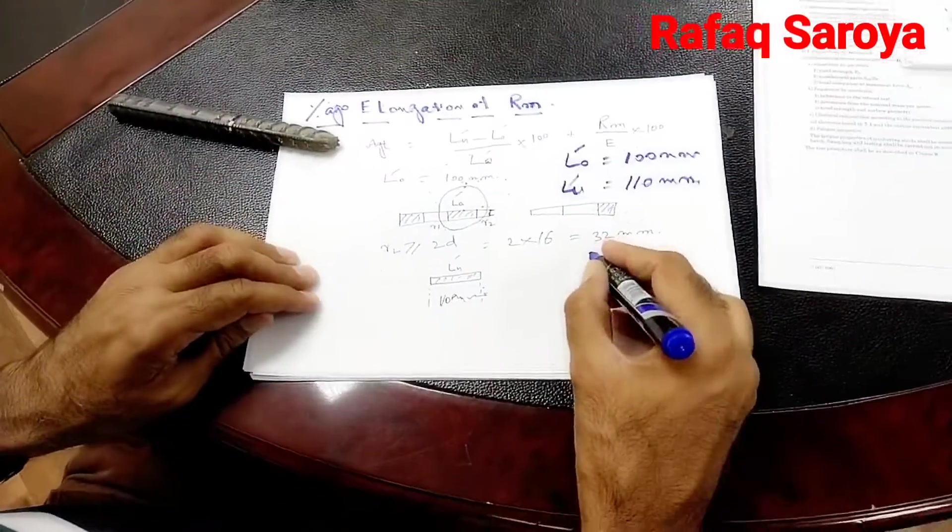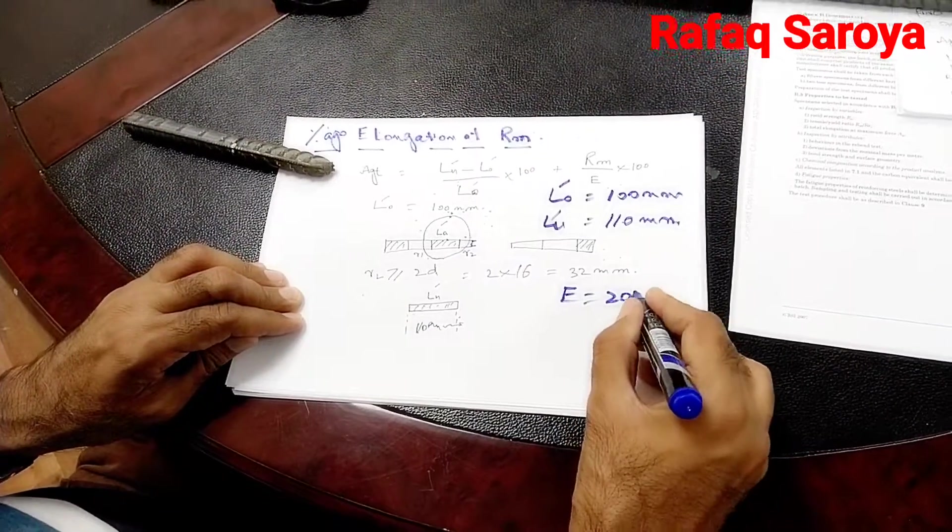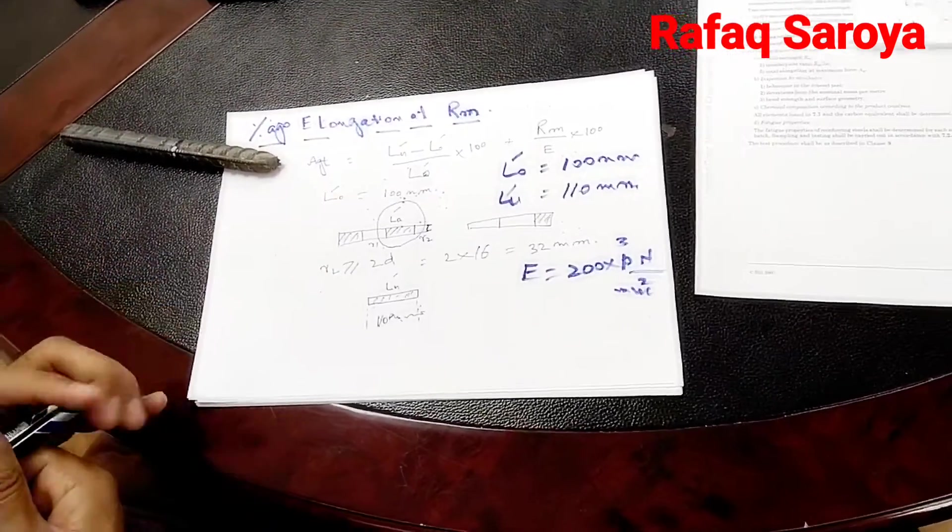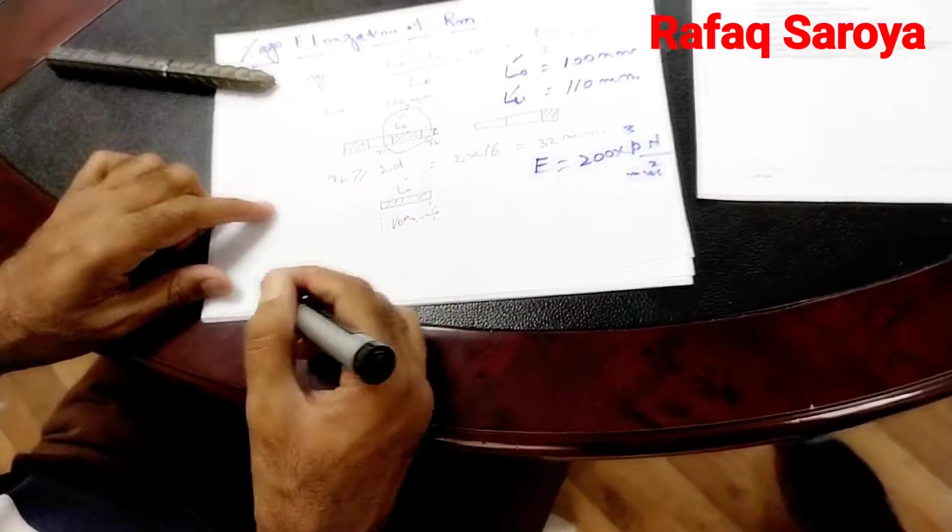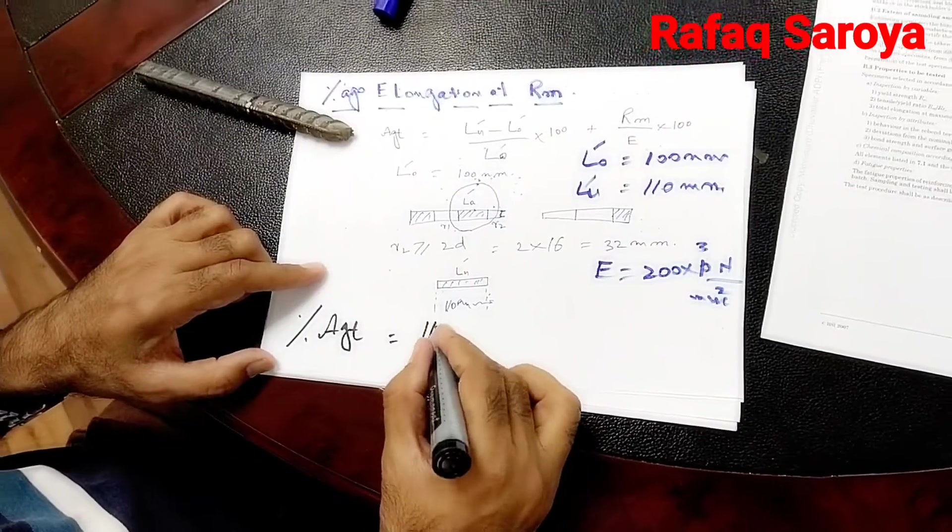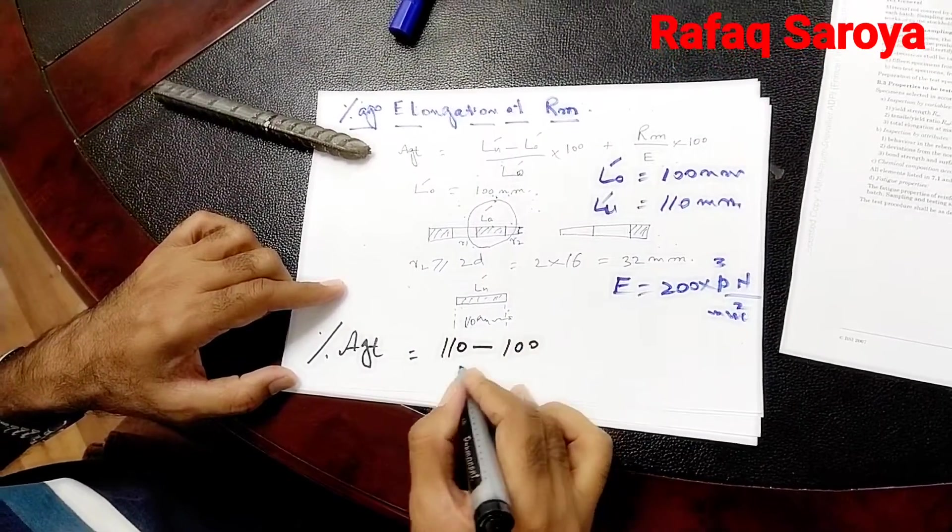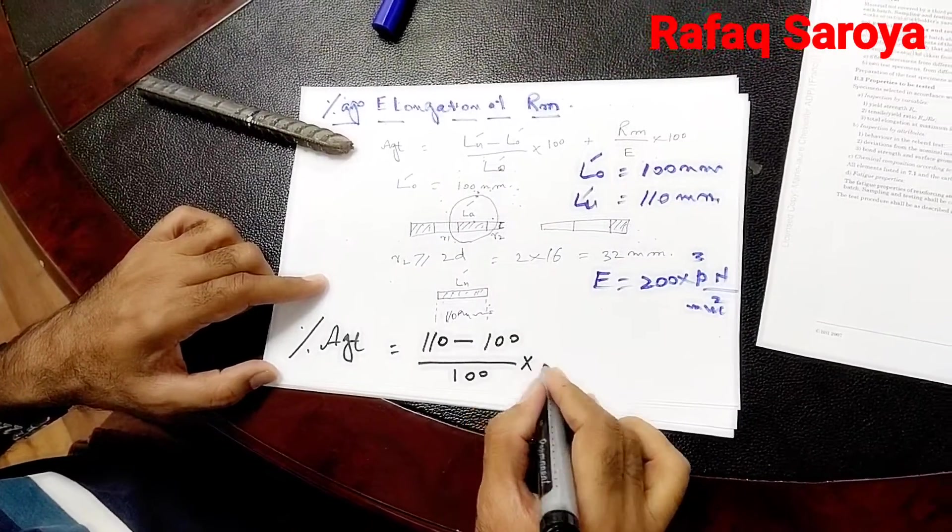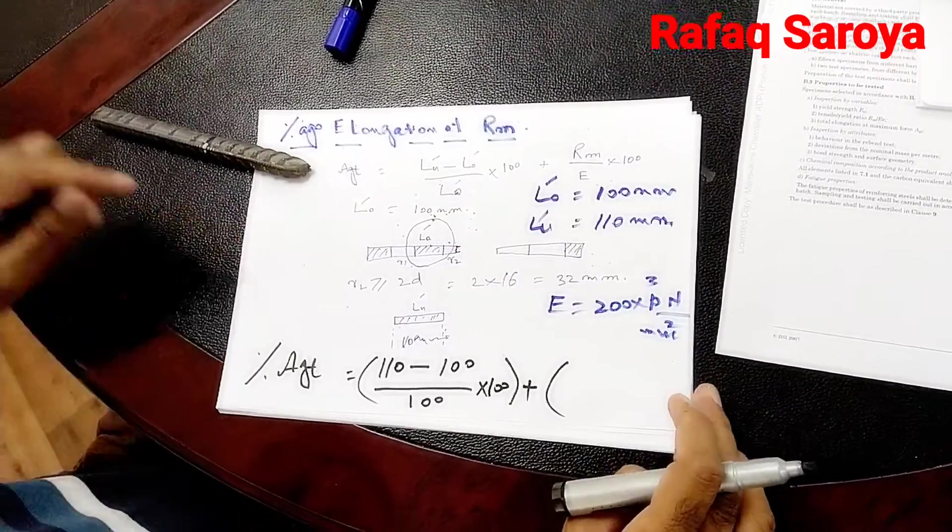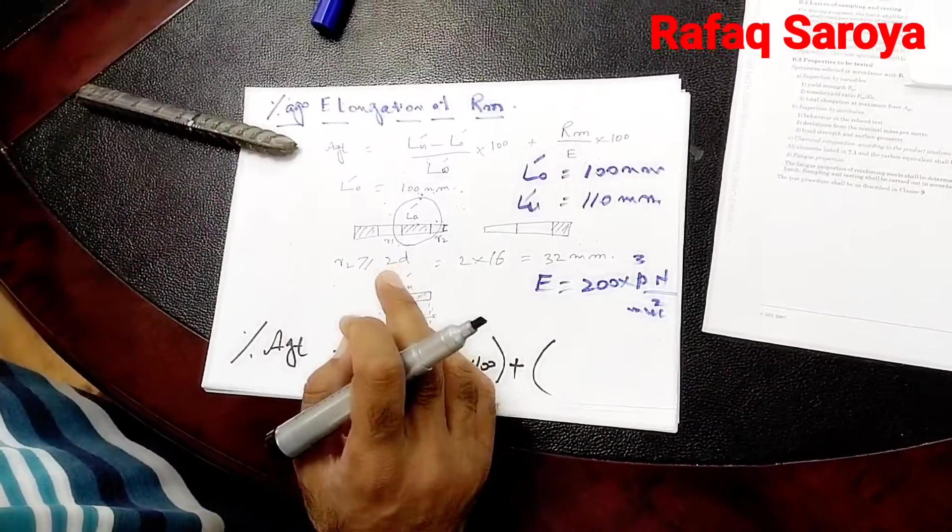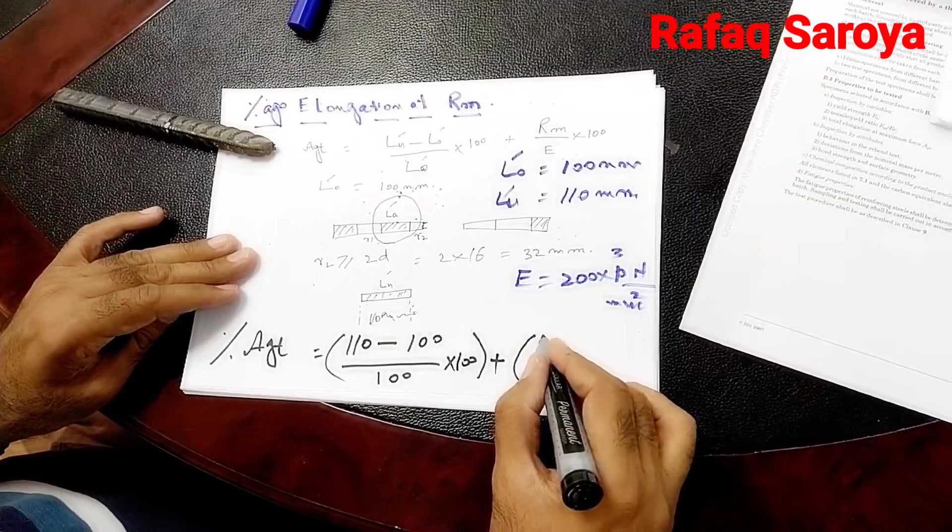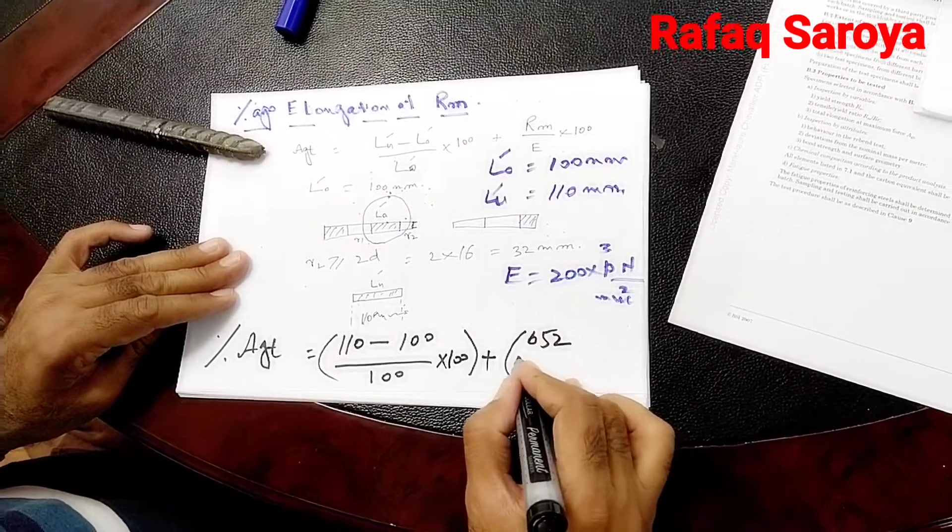I will put these values in this equation. The value of E is already known to you, that 200 multiplied by 10 to the power 3 Newton per mm square. If I put all these values in this equation, now let us see what will be the equation. 110 minus 100 divided by 100 into 100 plus value of RM, which we have calculated already in our previous video.